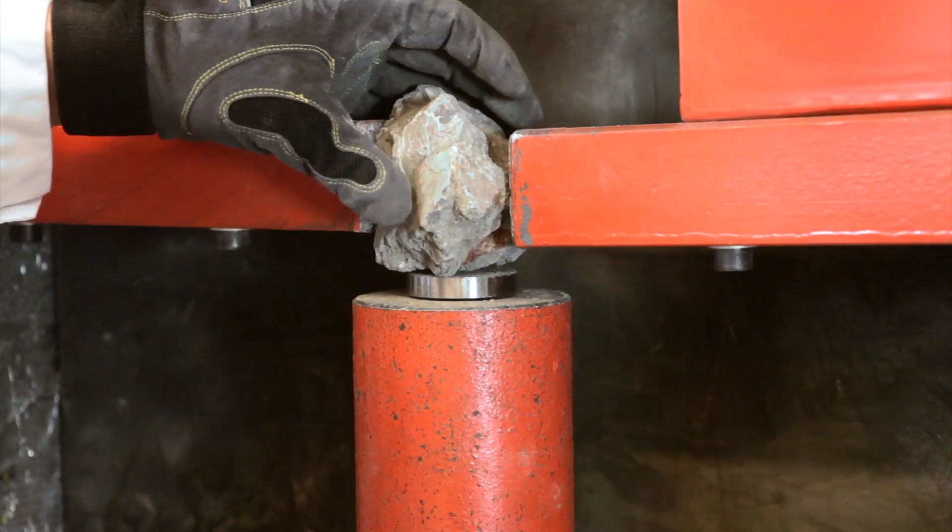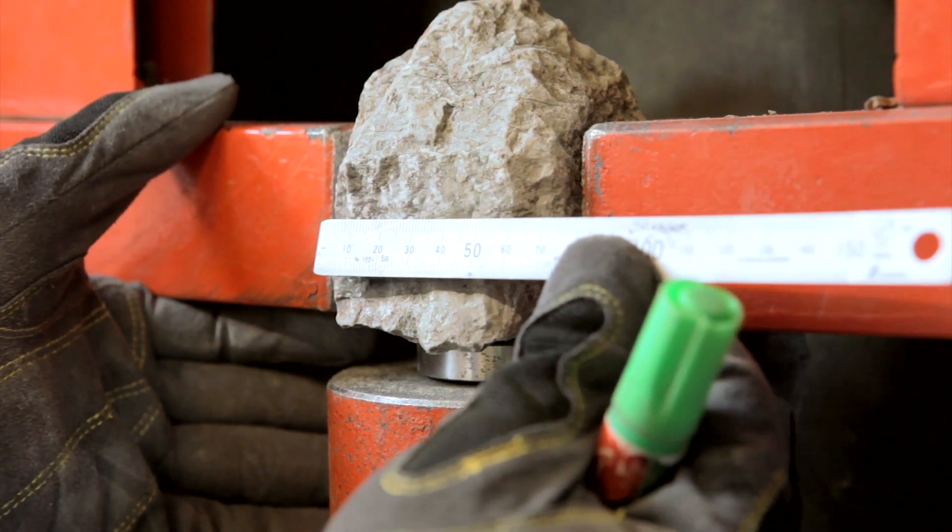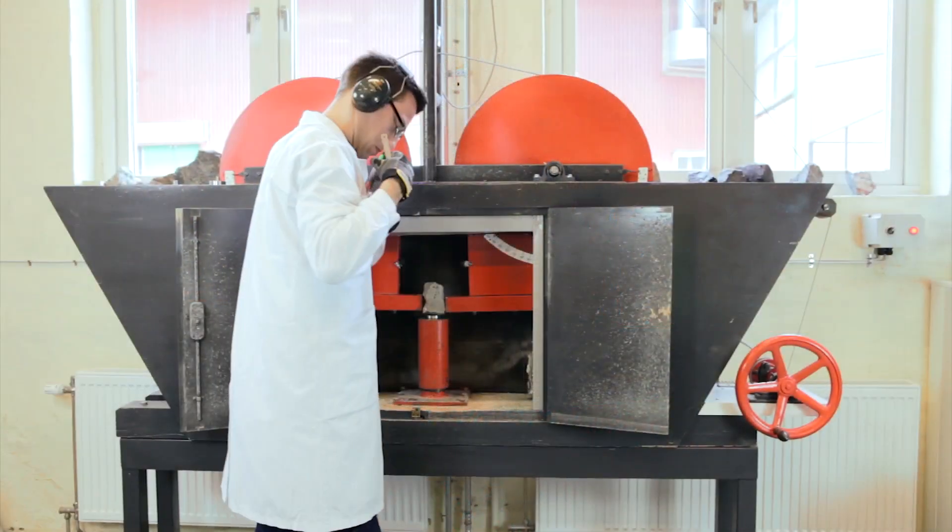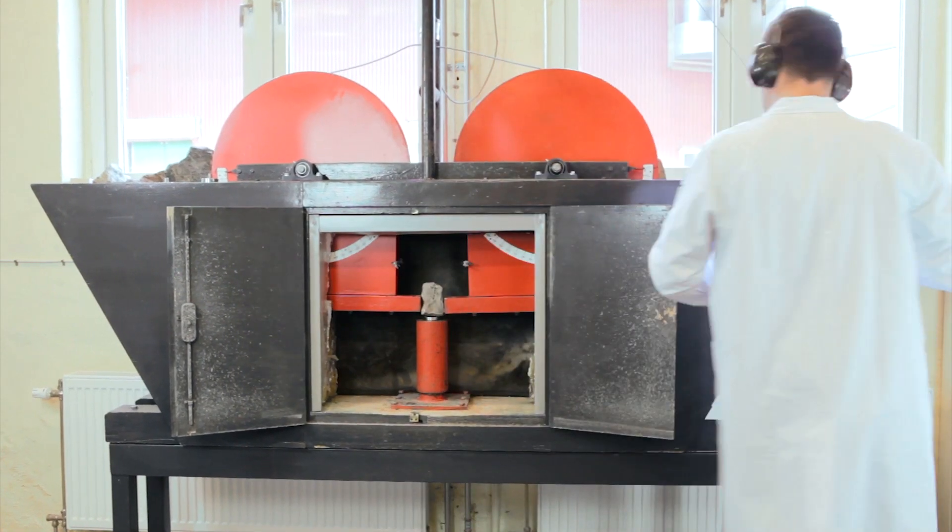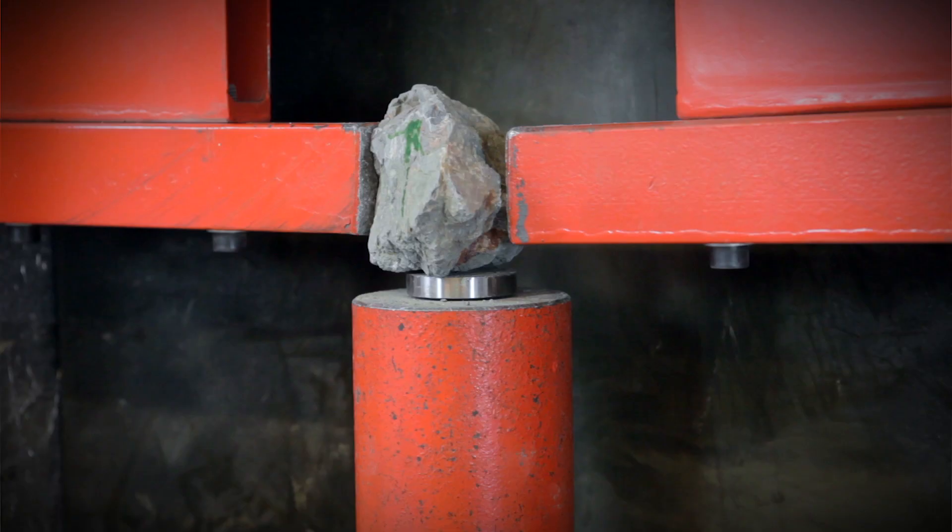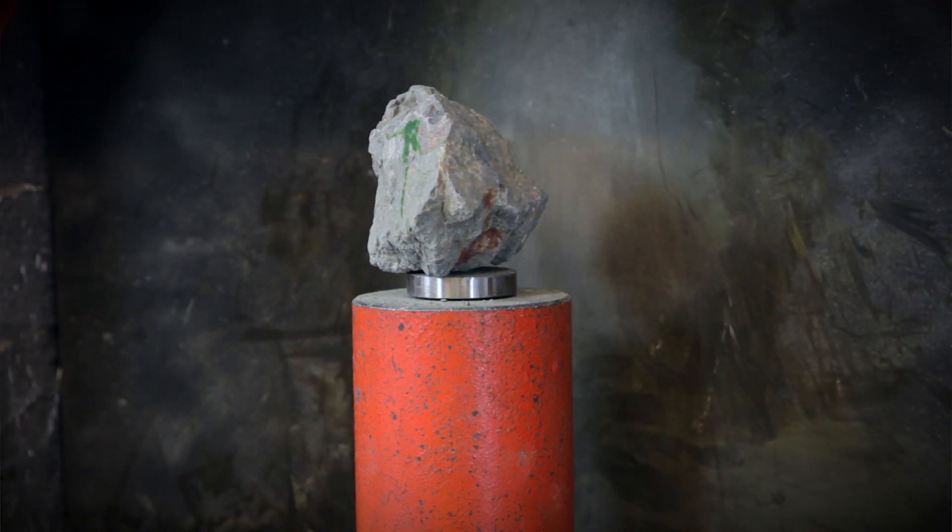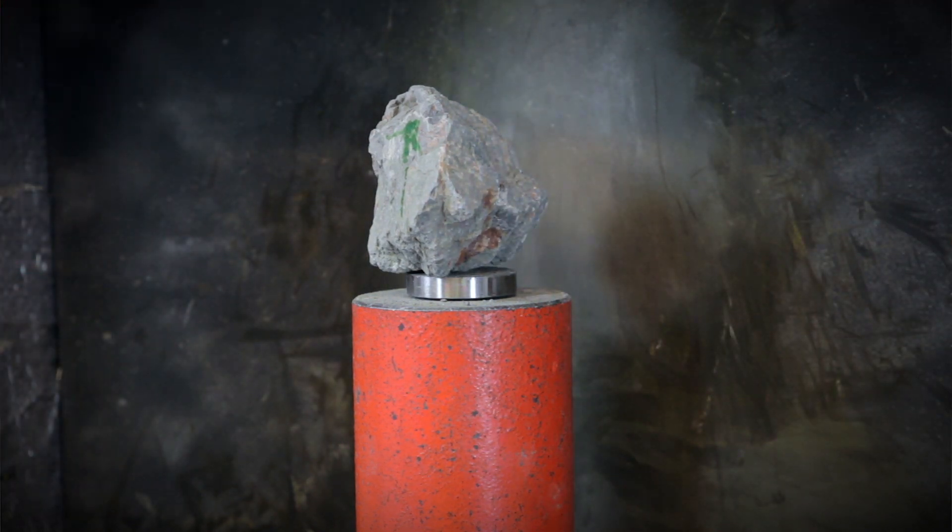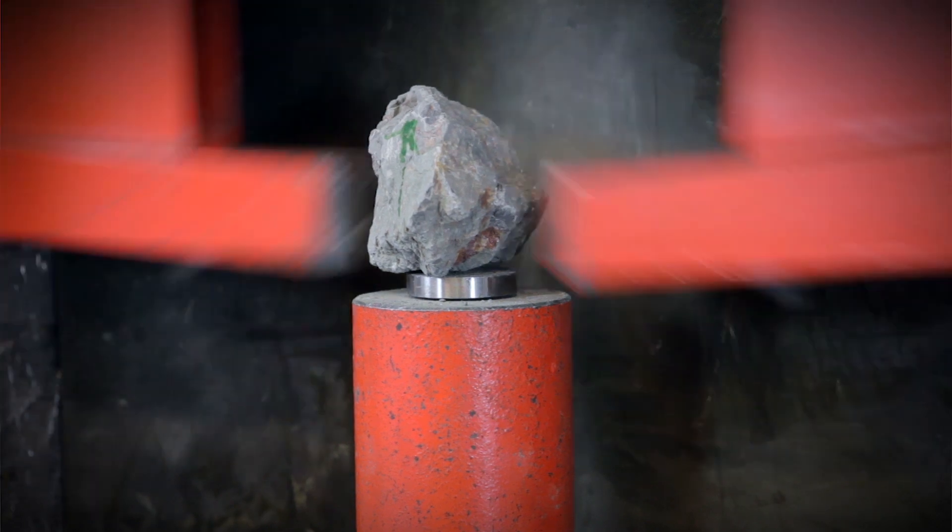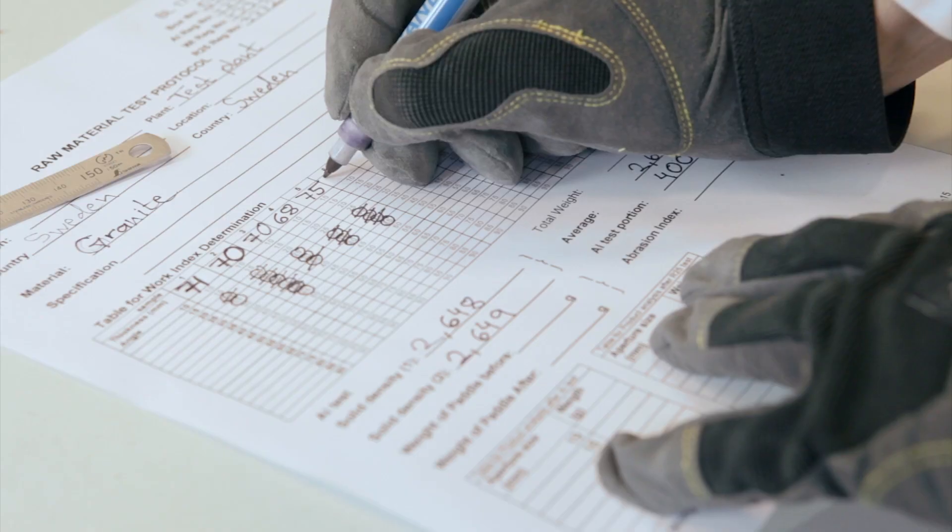First, the impact work index is measured. This expresses the material's toughness as the energy required to accomplish a given crushing operation. The stones are placed individually between two pivoted hammers, allowed to fall freely against the stone. The drop height is increased successively until the stone fractures. The energy required is divided by the thickness of the sample, giving the impact strength.